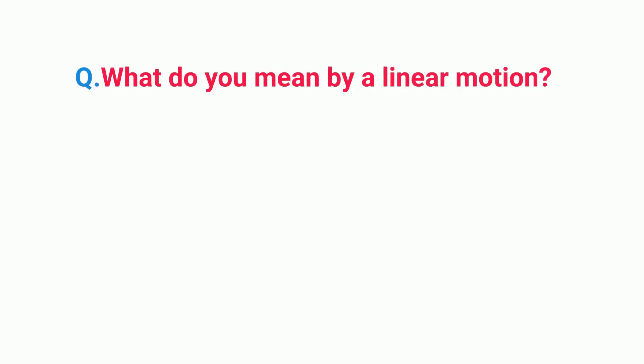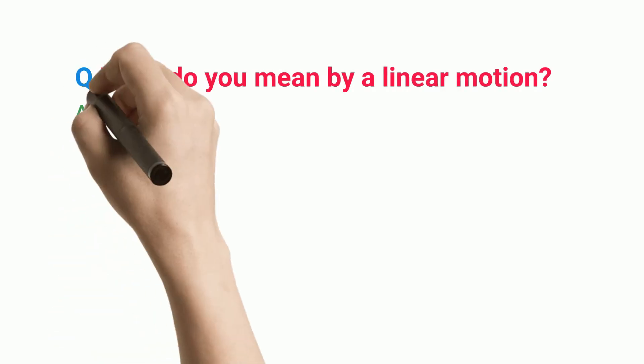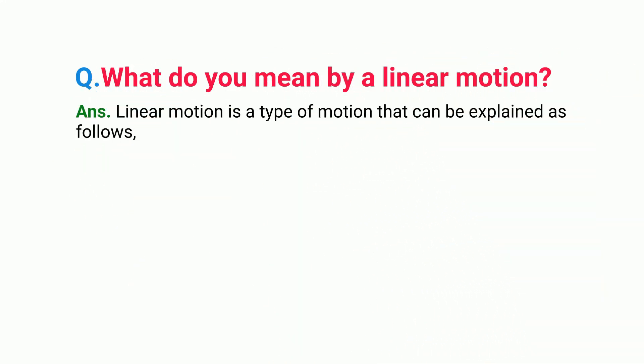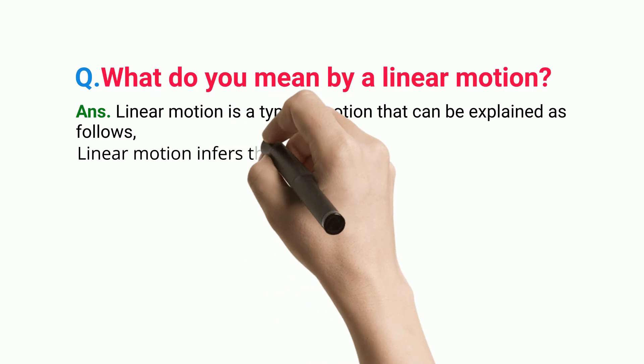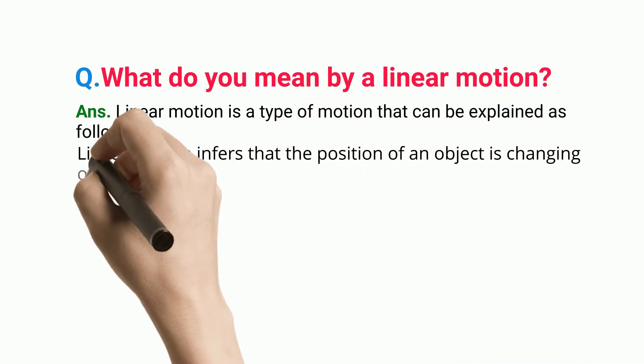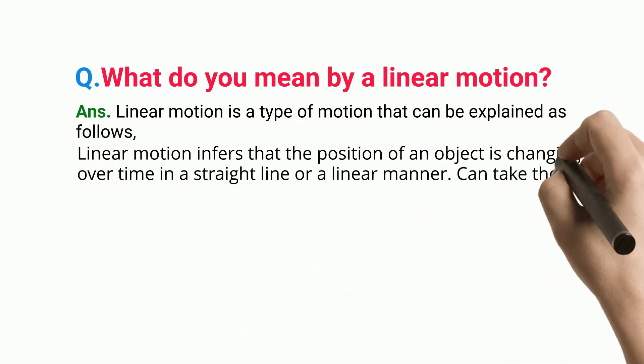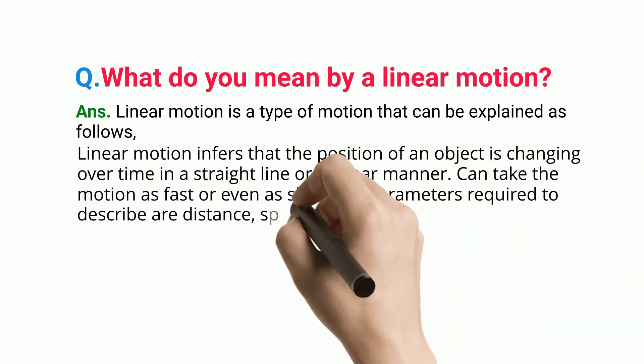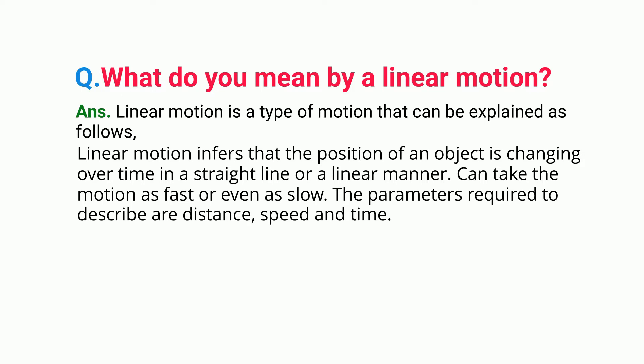What do you mean by linear motion? Linear motion is a type of motion that can be explained as follows: linear motion infers that the position of an object is changing over time in a straight line or linear manner. The motion can be fast or slow. The parameters required to describe it are distance, speed, and time.